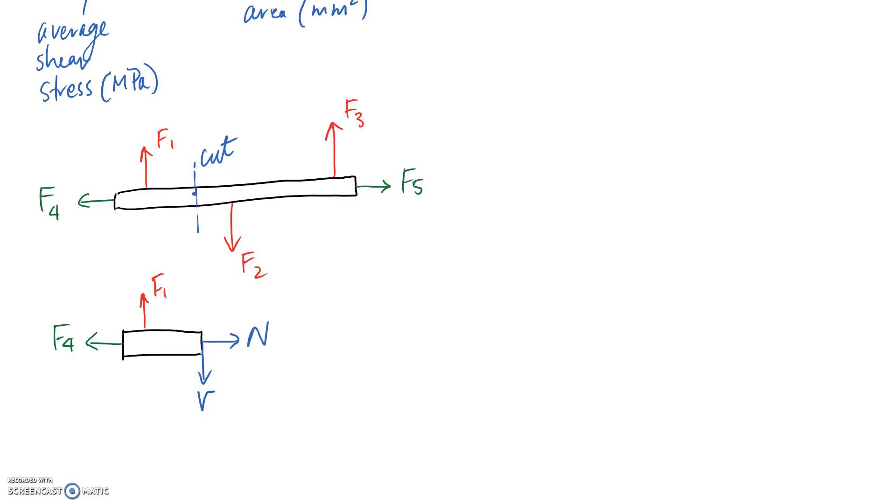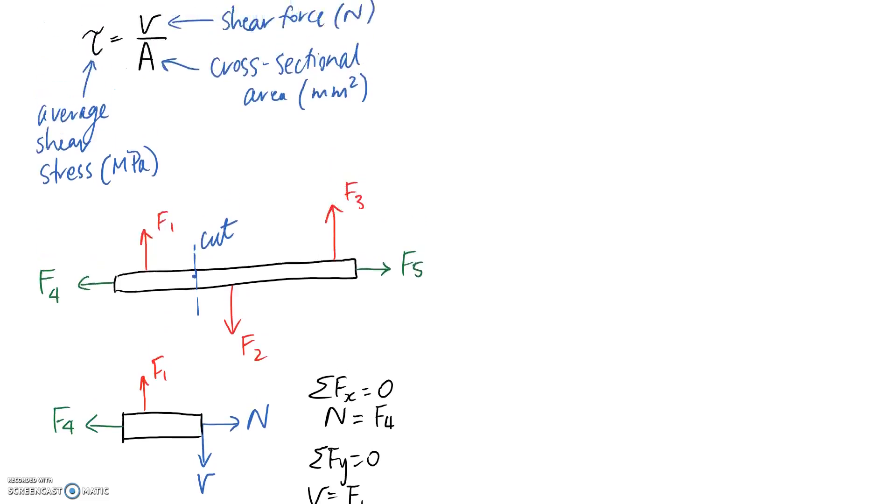So, in order to maintain equilibrium, we need to satisfy our equilibrium equations. Summing forces in the x direction, we're going to find that the internal axial load has to be equal to F4. And summing in the y direction, we're going to find that the internal shear load has to be equal to F1. And this would be V, if you had a number for it, what you could go back and put into your equation to calculate shear stress. You just need to know the cross-sectional area to be able to find it.